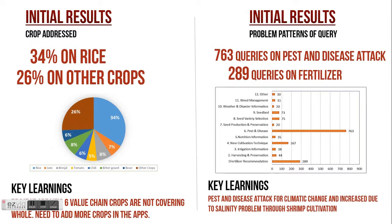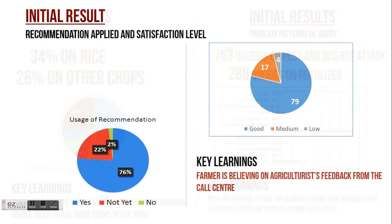Looking at problem patterns in the queries, 763 queries came in about pest and disease attacks, because the study areas are salinity regions in southern Bangladesh. Due to salinity and climate change conditions, most pests and diseases are exacerbated. In southern Bangladesh, one of the major sources of income for farmers is shrimp cultivation, but shrimp cultivation causes the entire soil to degrade through salt water. Additionally, 289 queries came in for fertilizer recommendations.